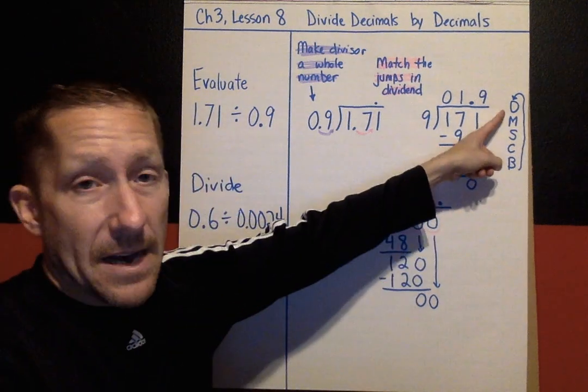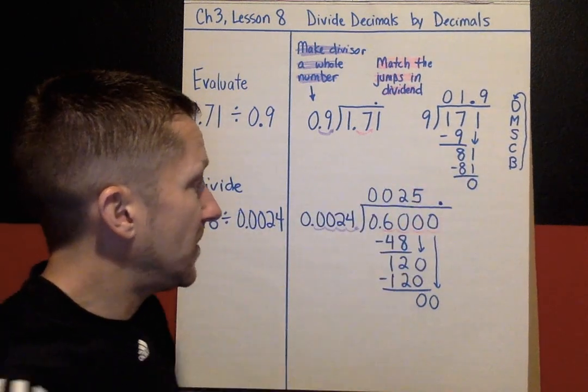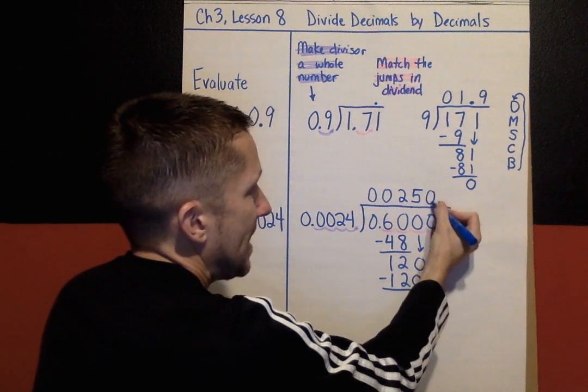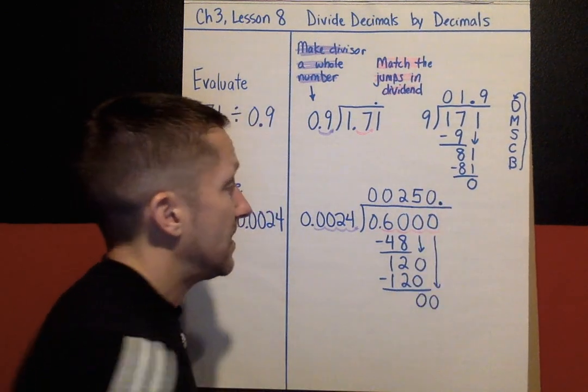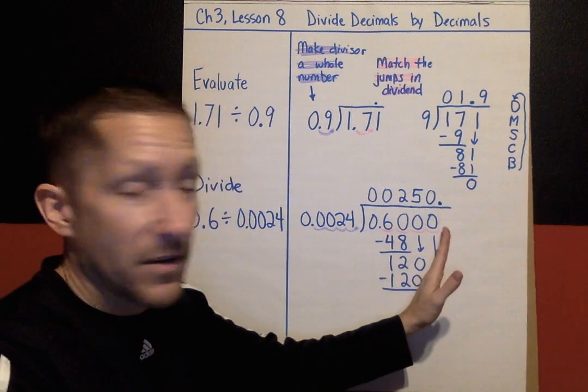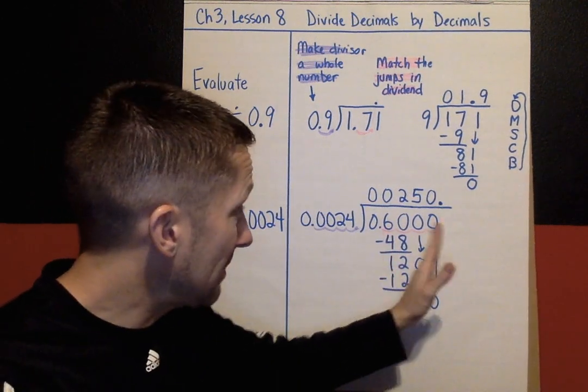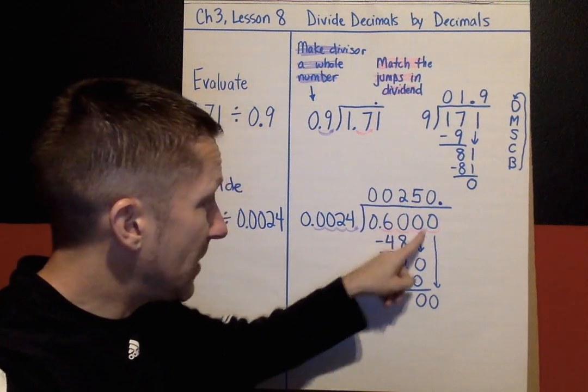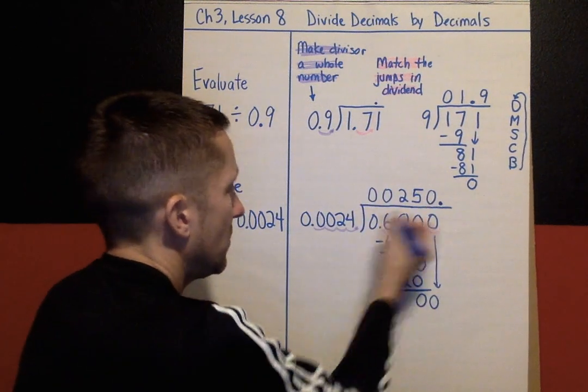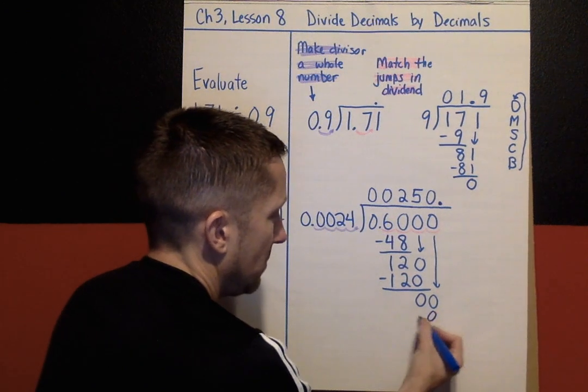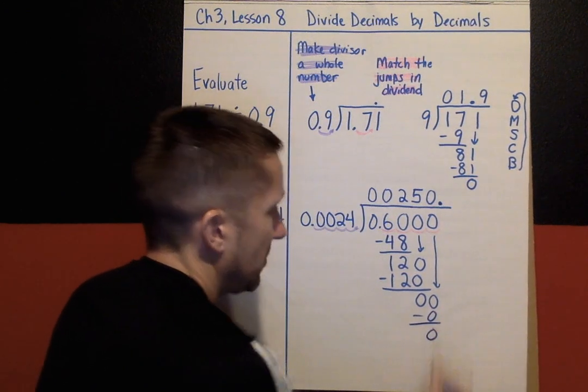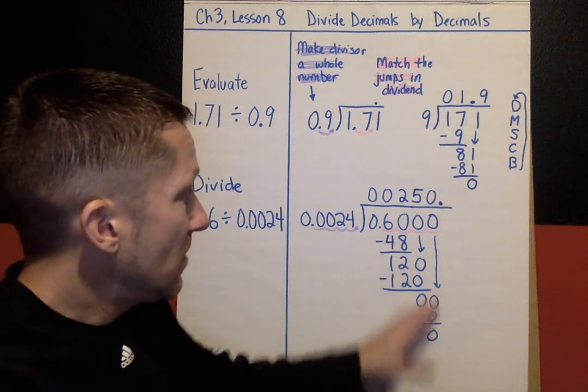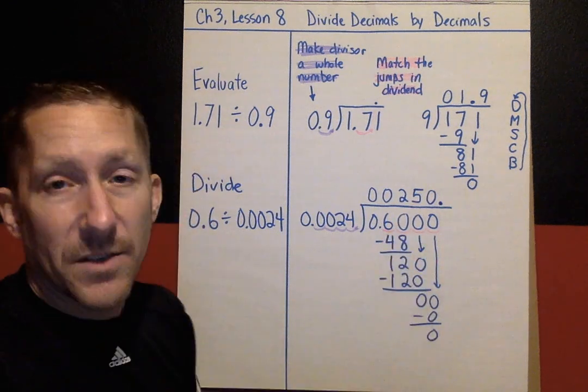Back to the top. Divide: How many 24s fit into 0? None. So I have to record that 0 right there. Again, this is why it's super important you're using grid paper, keeping everything lined up. You can see how the numbers are directly lined up above each other. And 0 times 24 is 0. Subtract, and we get 0. Now there's no more numbers to bring down. So my answer is 250. 0.6 divided by 0.0024, the answer is 250.